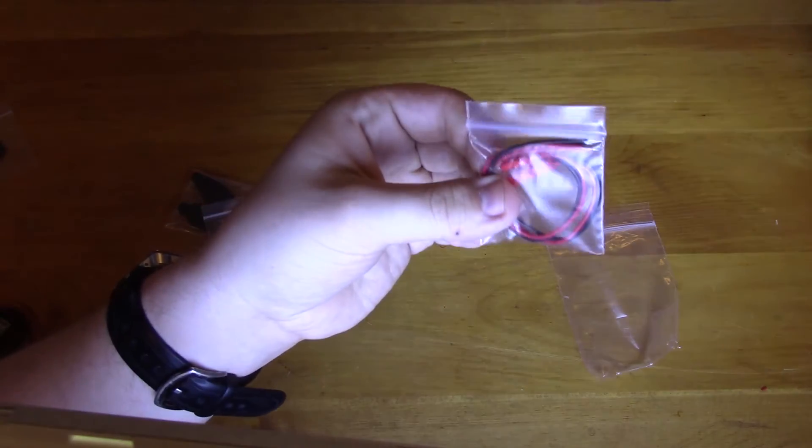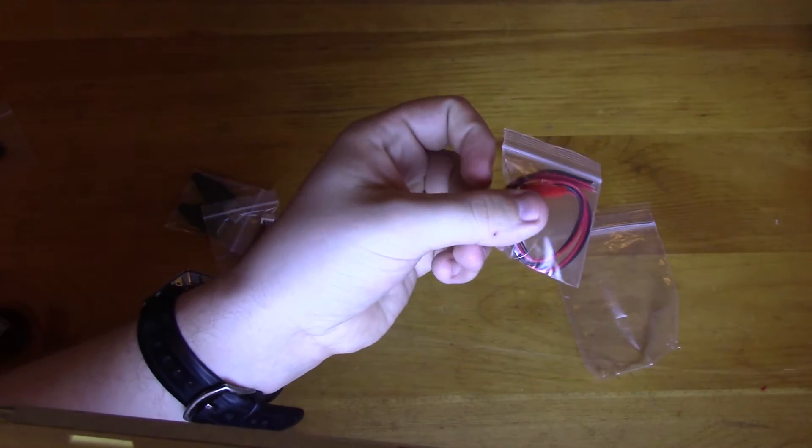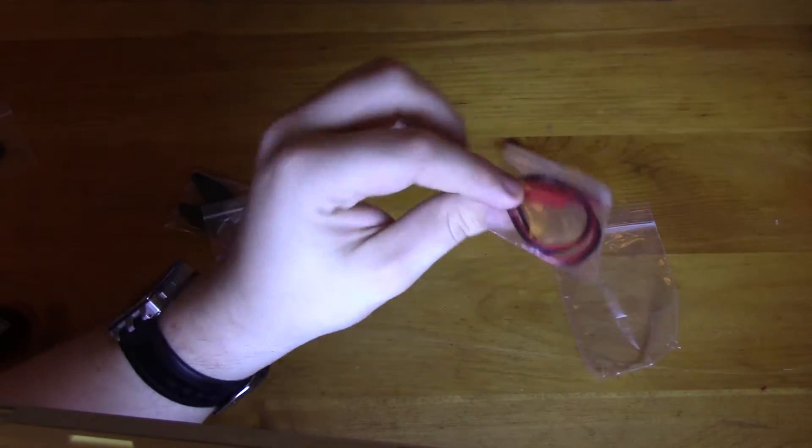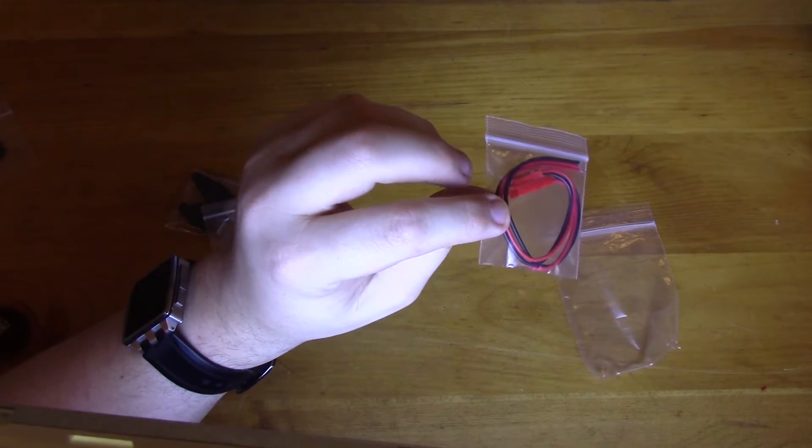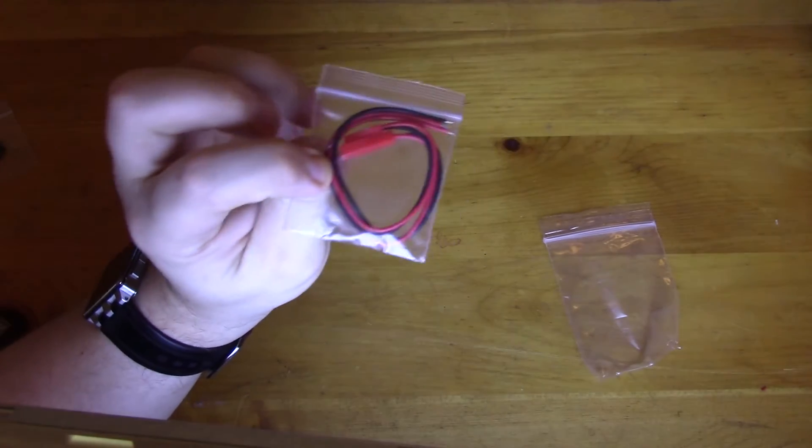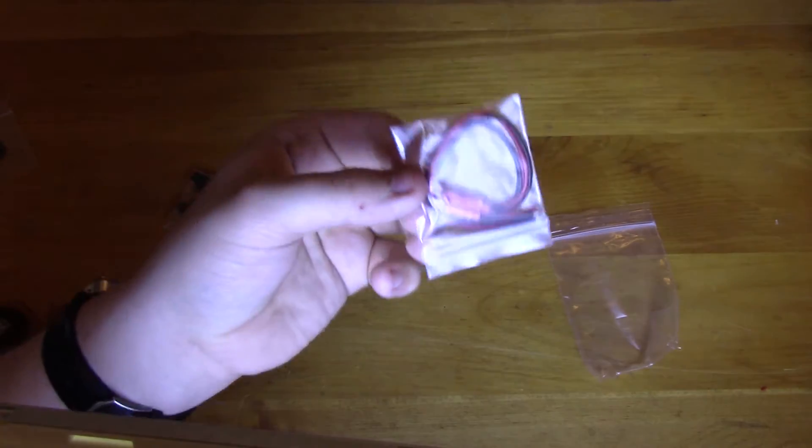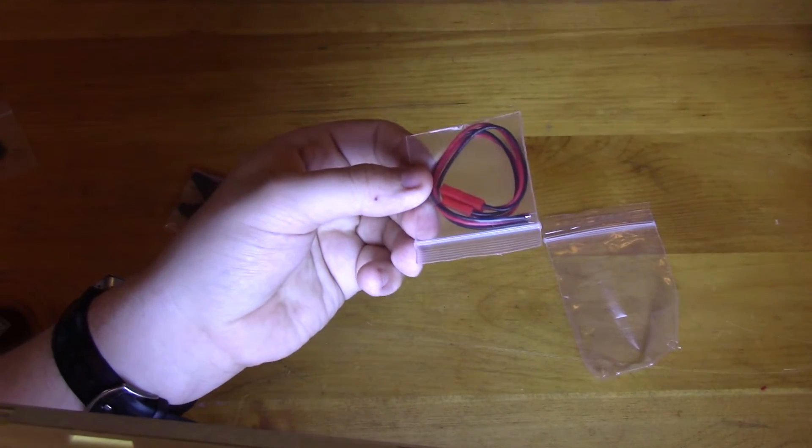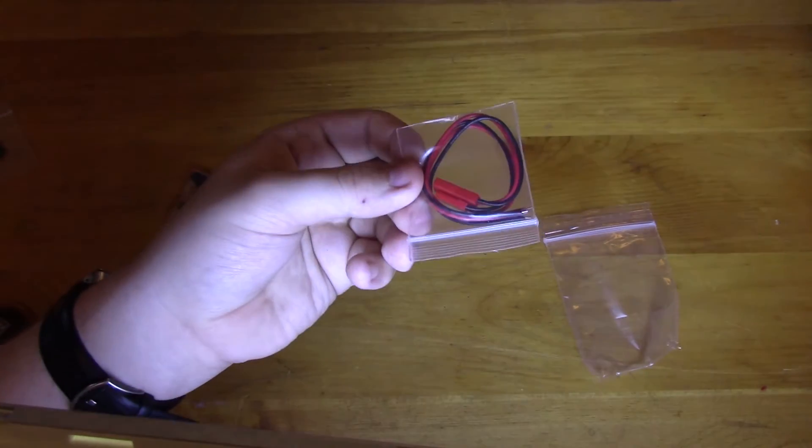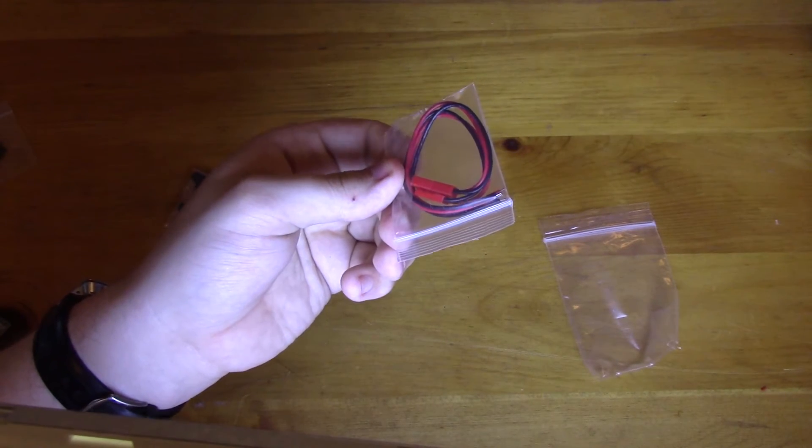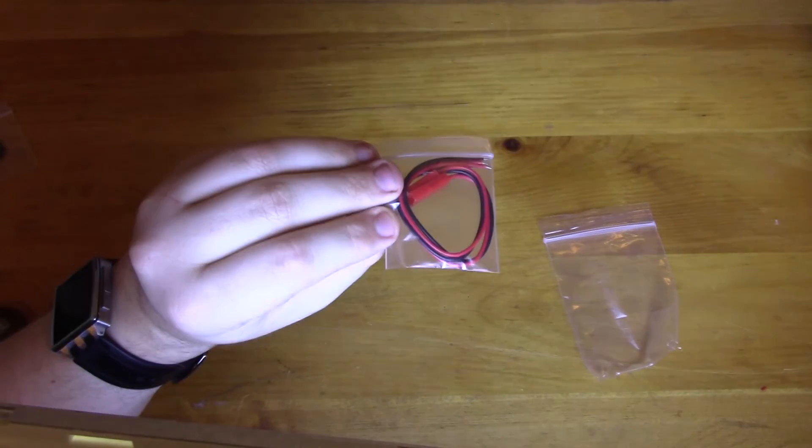Then I got here some battery connectors. I forget what they're exactly called, but they're the most common connector for RC vehicles for power connection. I like to keep some of those around because honestly you buy them on eBay for pennies. I keep a good 20 or 30 pairs of them stocked at all times. Really useful.